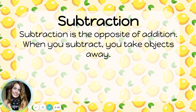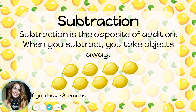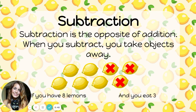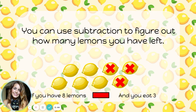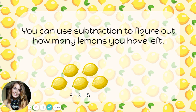Subtraction is the opposite of addition. When you subtract, you take objects away. Let's say you have eight lemons and you eat three of them. You can use subtraction to figure out how many lemons you have left. Eight minus three equals five. When you subtract, you'll see words like take away, left, how many more, how many less.